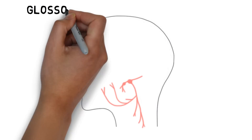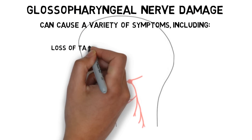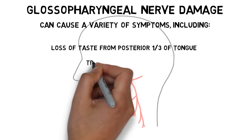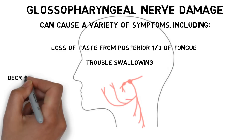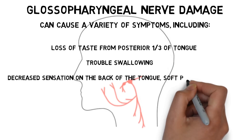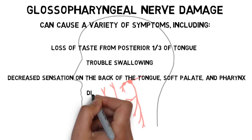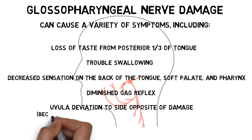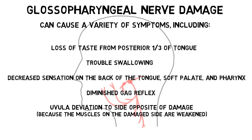Damage to the glossopharyngeal nerve can cause a variety of symptoms, including a loss of taste on the posterior third of the tongue, trouble swallowing, and generally decreased sensation on the back of the tongue, the soft palate, and pharynx. Patients may also have a diminished gag reflex, and the uvula will often deviate to the side opposite from where the damage has occurred.